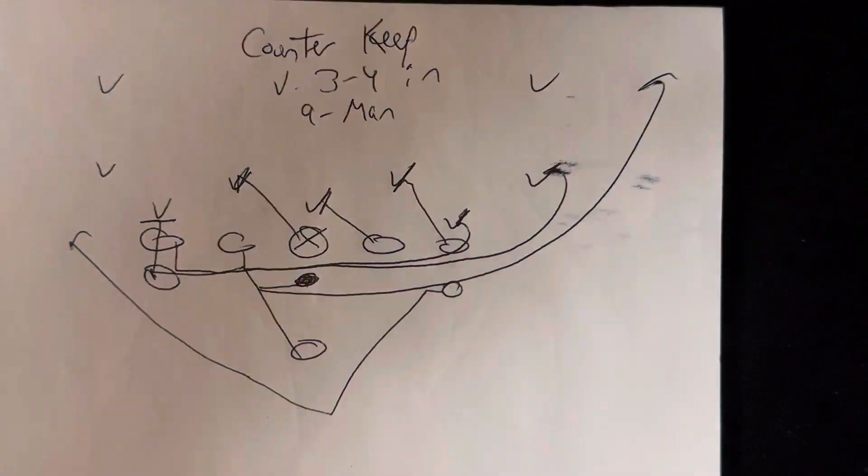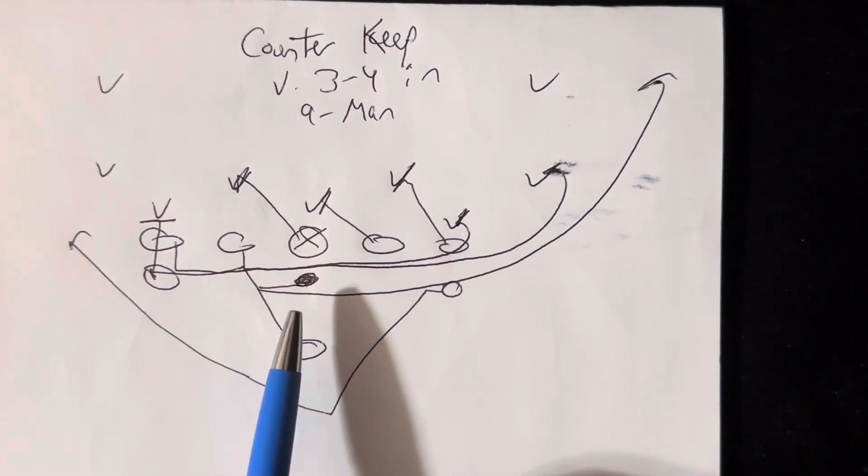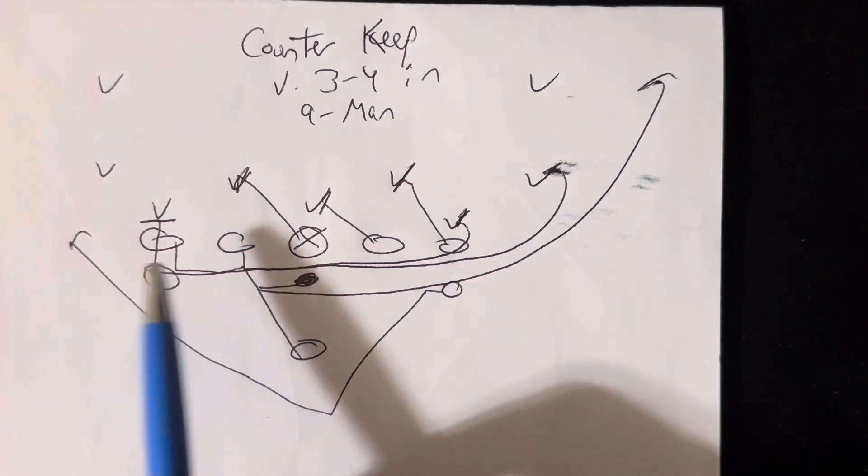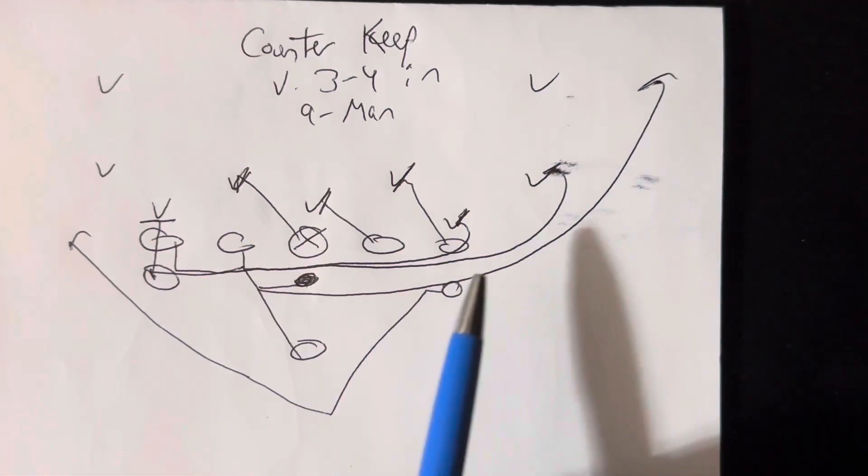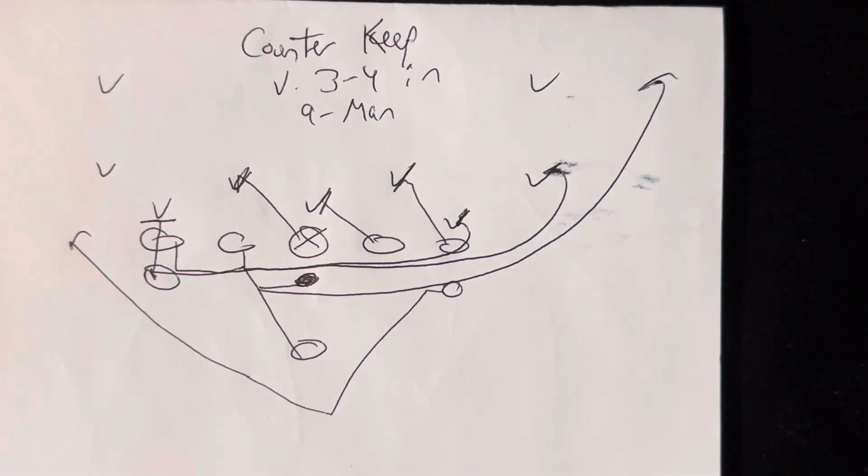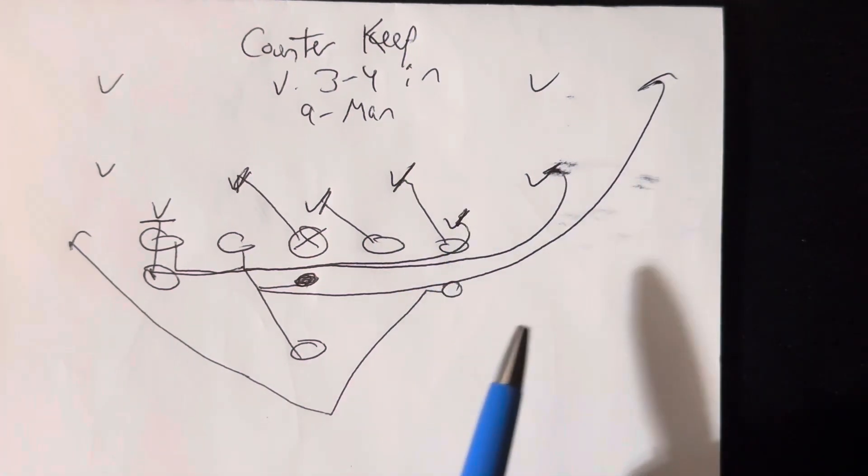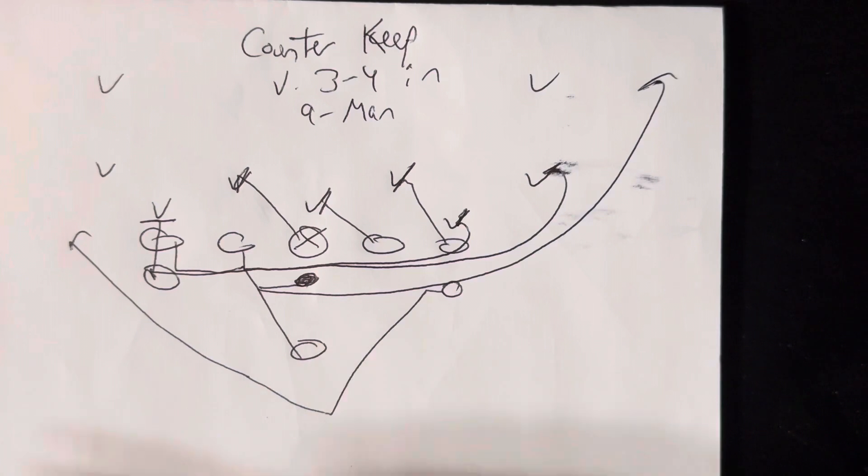Backside A-back is going to run the pitch away from the play. Quarterback takes the snap, jumps to the left, he doesn't point the ball, lets the guard and the end clear, and then he simply follows the end. If the end kicks the player, he would have to turn up inside. If he logs him, he'll continue to the outside, which is the design of the play.